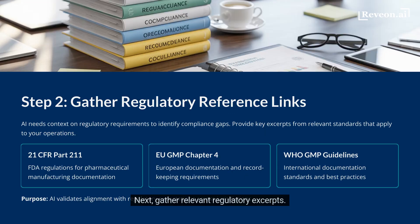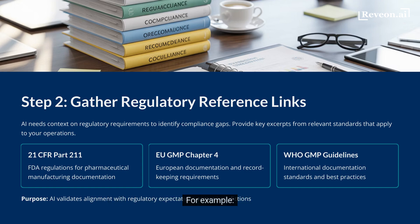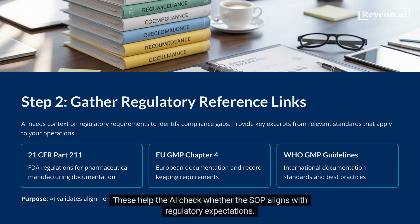Next, gather relevant regulatory excerpts. You don't need the entire regulation, just the sections related to documentation. For example, 21 CFR 211, EU GMP Chapter 4, and WHO guidance. These help the AI check whether the SOP aligns with regulatory expectations.